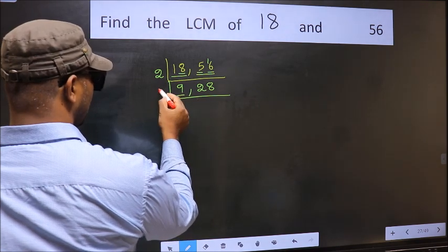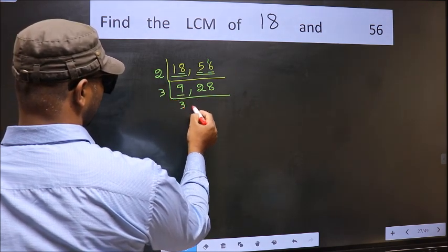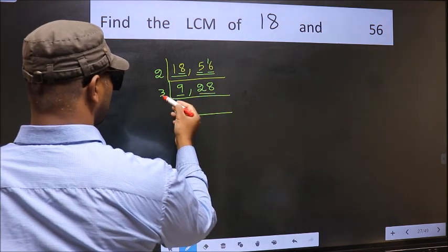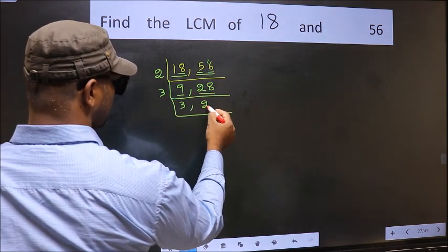Now here we have 9. 9 is 3 threes, 9. The other number, 28, is not divisible by 3, so we write it down as it is.